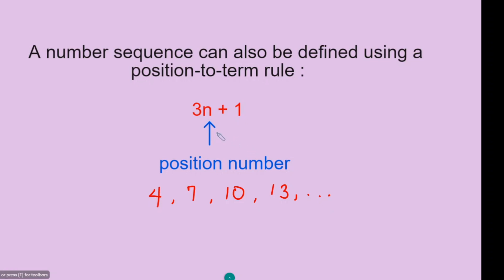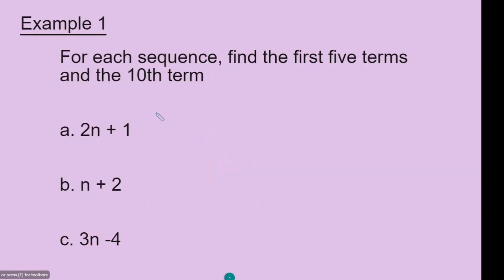So n here represents the position number, and it is very critical for us to work out the terms in the sequence. In this example, we need to find the first five terms and also the tenth term using these formulas.